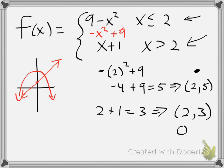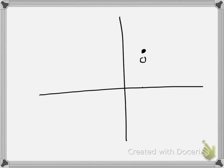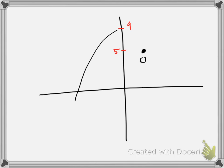Now looking back at the graph of the original negative x squared plus 9, you can see how it curves and opens down. Since it moved up 9, this graph normally would intersect at 9 — way up here — and this endpoint is at 5. So the graph goes up through 9 and comes down to 5. So there's the first part of my graph: it opens down and ends at the point (2, 5).